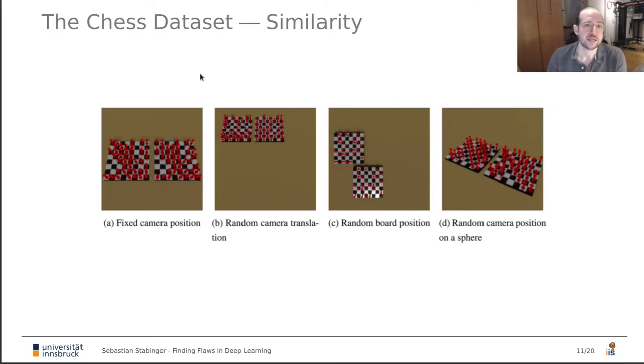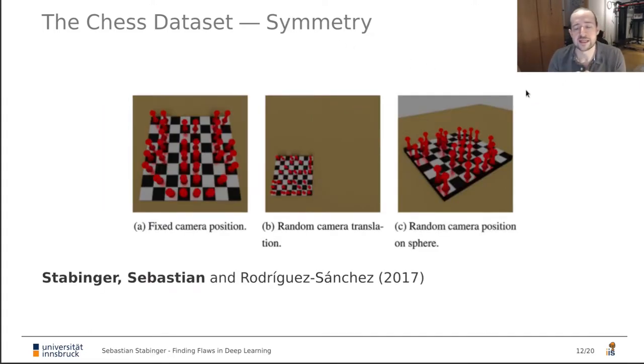Since the SVOD data set shows very unrealistic images, I created the next data set myself. I call it the chess data set. And the chess data set always shows chess boards with red pawns on them. And for the similarity task, the goal is to decide whether the positioning of the pawns on one chess board is the same as on the other one. And there are different difficulties of this data set. So the easiest one is with a fixed camera position where the chess boards are always in the same position from the same angle. And the most difficult one is with random camera positioning on a sphere. So the camera can be positioned around the sphere around the chess board. So there's a lot of variation in the angles that you can see the chess boards from. That's the similarity task. And as a second task, there's the symmetry task where there's always only one chess board. And the goal is to detect whether the pawn positioning is symmetric along a symmetry axis.